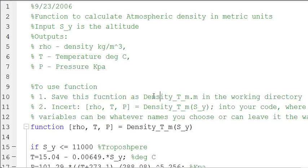Your function is a script that you call from inside of another MATLAB code. So you're going to write a MATLAB code, and somewhere in there you're going to need to calculate the density given that you know the height above sea level. You can put that into this density_t_m function and calculate it without having to have all this code inside of your main script.